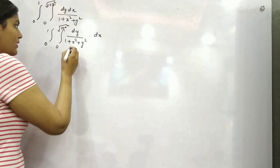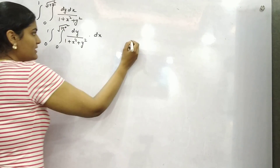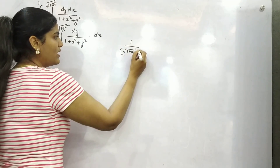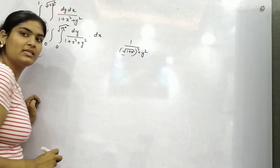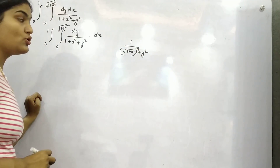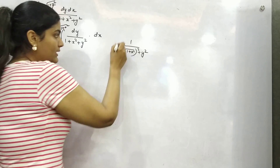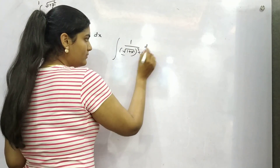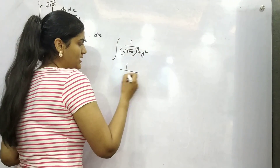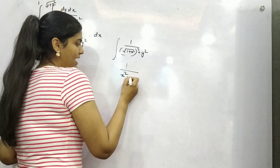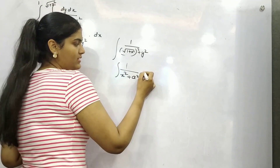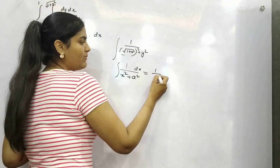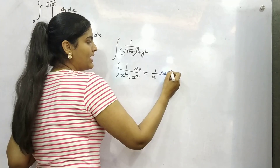Now if you see, you can write it like root 1 plus x square, whole square, plus y square. The formula for this — in the general scenario — is: the integral of 1 over (x square plus a square) equals 1 by a times tan inverse x by a.